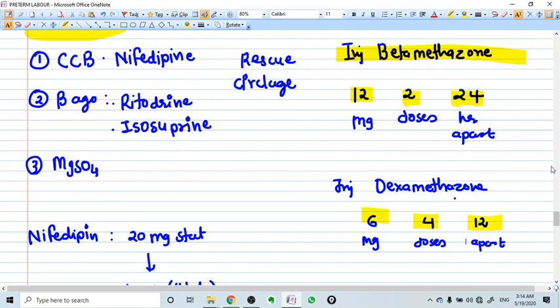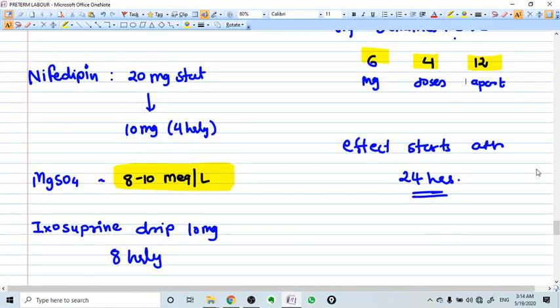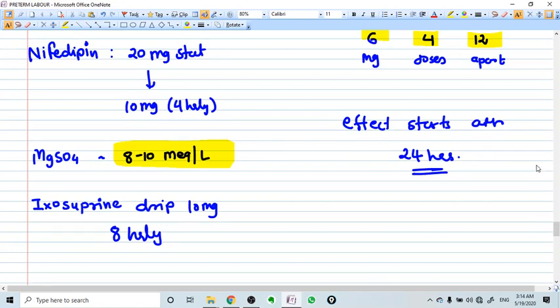In India, dexamethasone is very readily available. Betamethasone is not that available. Dexamethasone is cheaper also. The effect of the steroid starts after 24 hours. Everybody knows.